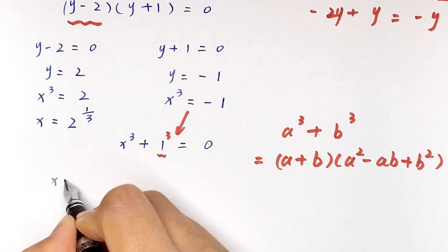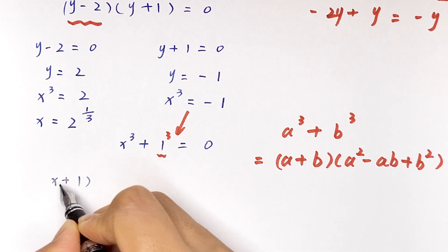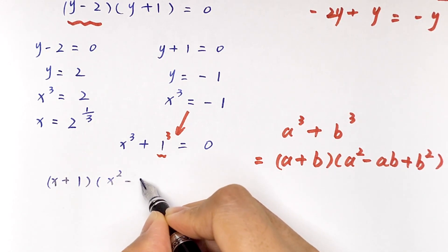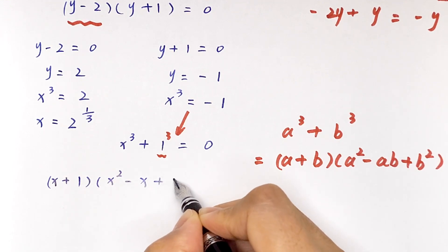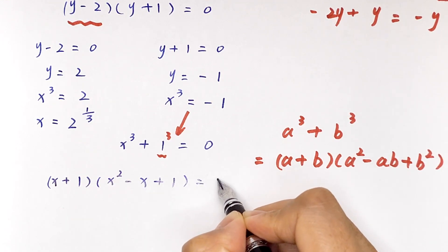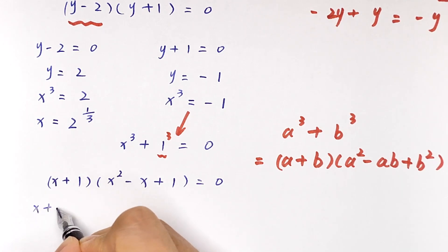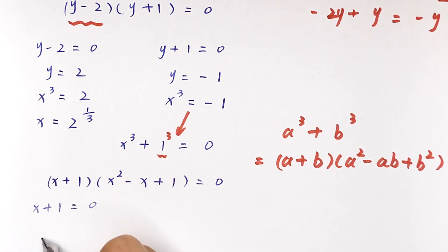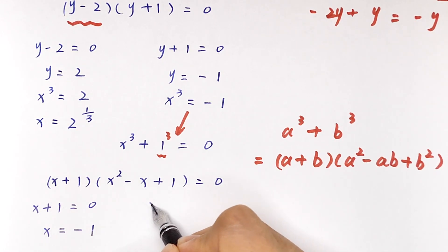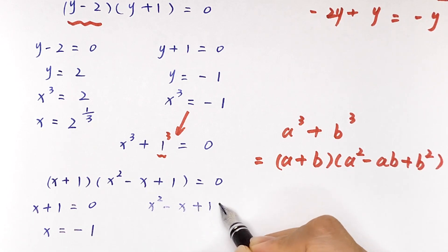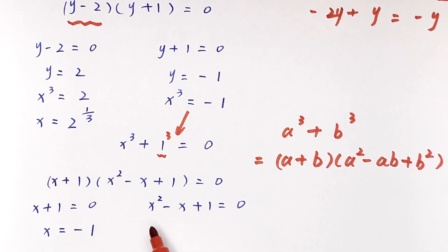Applying the formula, we get x plus 1, bracket, times x squared minus x plus 1, bracket, equals 0. From x plus 1 equals 0, we get x equals negative 1. The remaining factor x squared minus x plus 1 equals 0 is a quadratic equation.